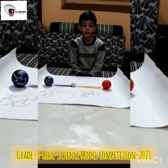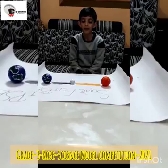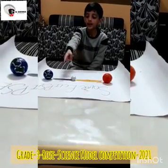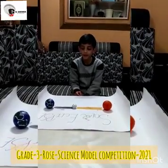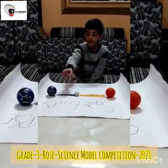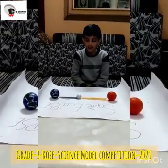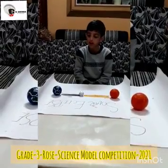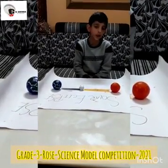Respect to the principal, coordinator, and my dear friends. This is my model of solar eclipse. A solar eclipse occurs when the moon comes between the sun and the earth. Sunlight does not reach the earth and it becomes dark.